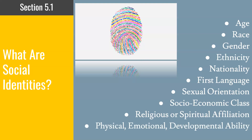Each of these categories, every person has. Just like the fingerprint image that you see, every person may have unique attributes within each category, but it's important to start our conversation about off-campus experiences by thinking about how our identities are shaped by these social categories.